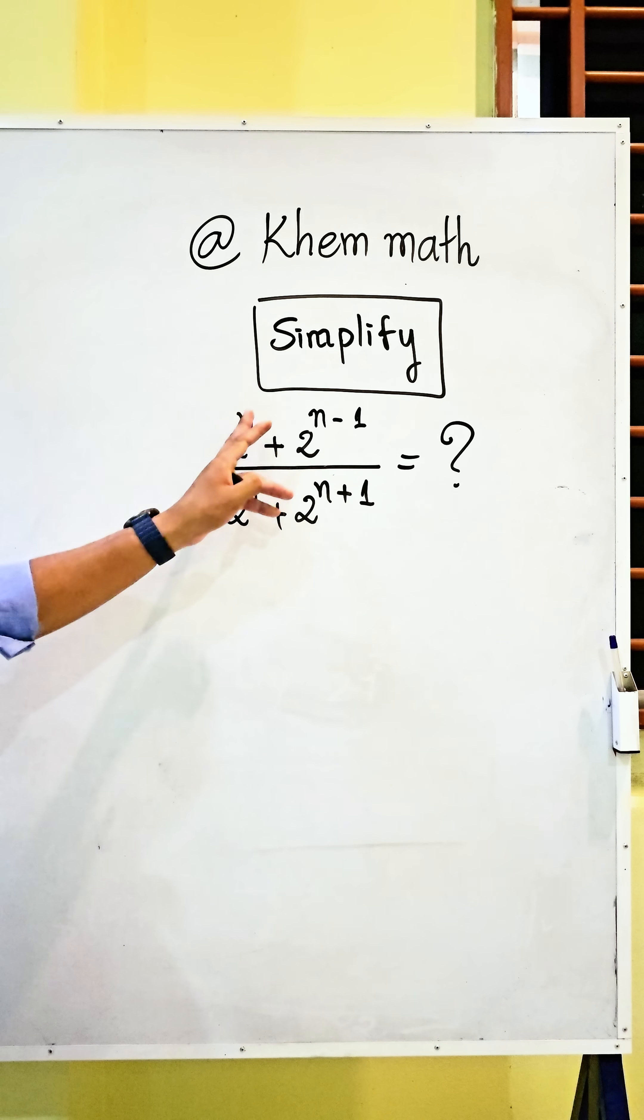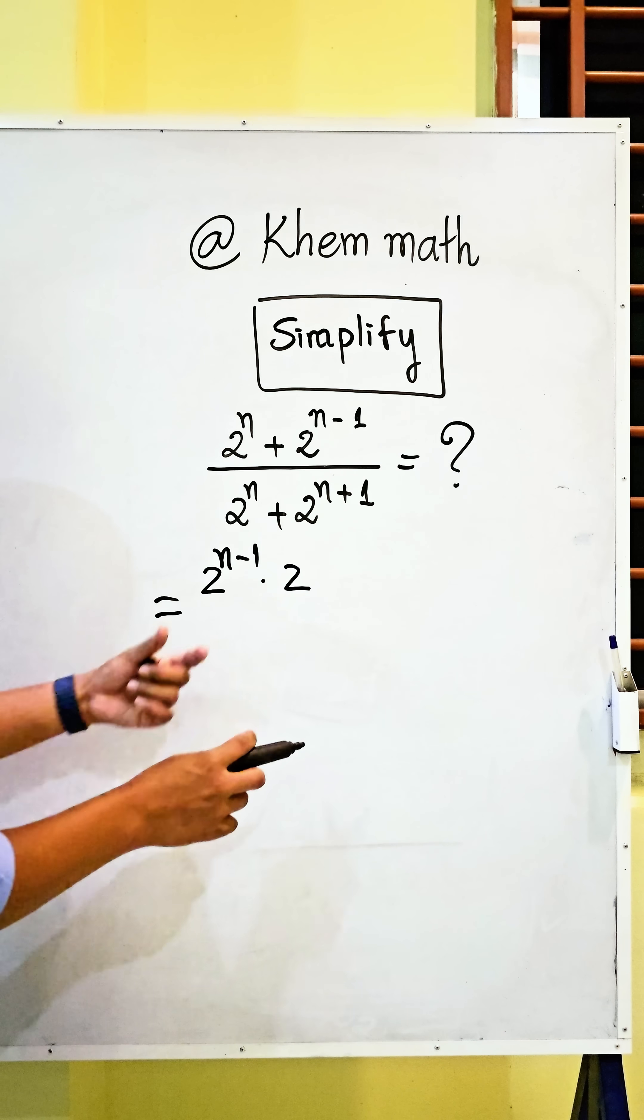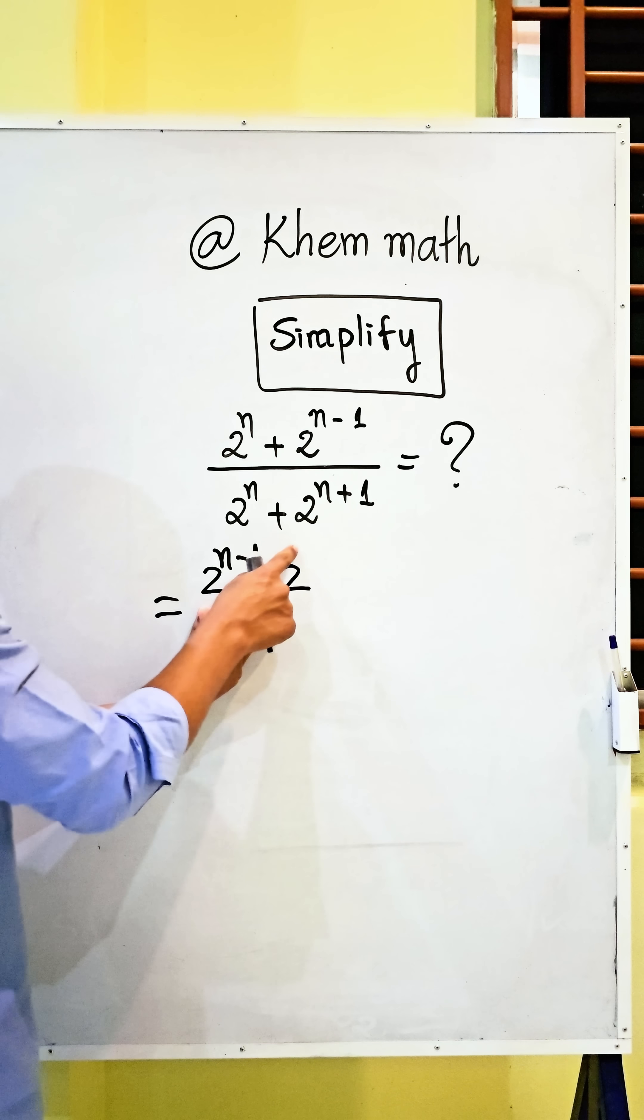So I can rewrite the same. It is equal to 2 power n minus 1 times 2. And here 2 power 1 is this.